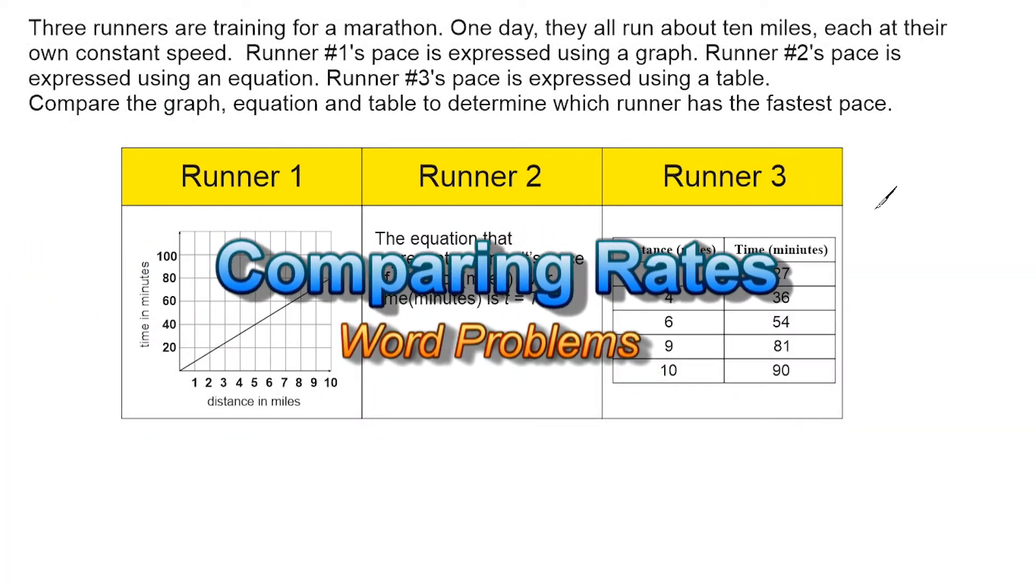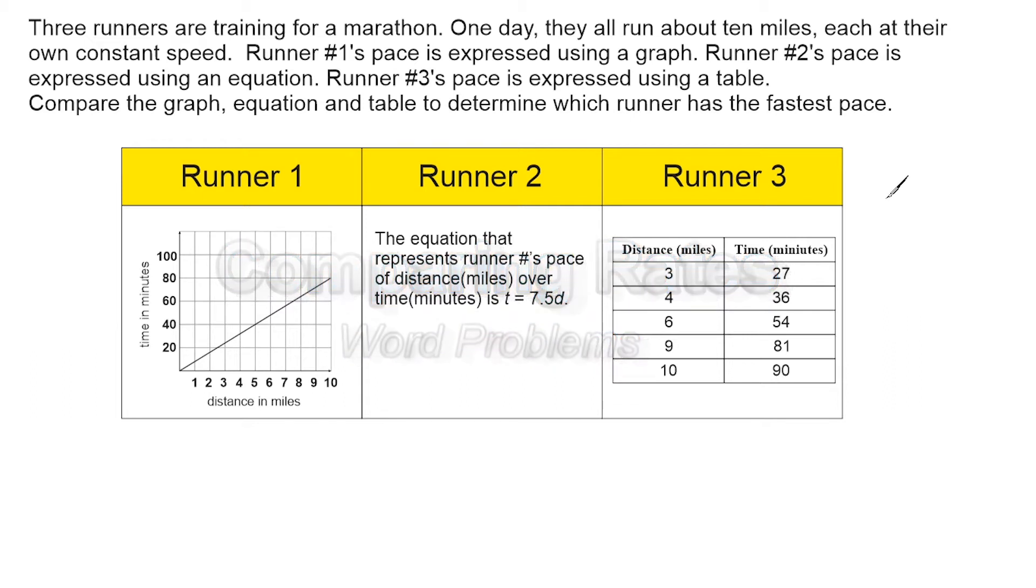Alright, what we have here is a word problem that involves distance and time. The gist of this problem is that we have three runners running a marathon, and we have to figure out which one of the three runners has the fastest pace.